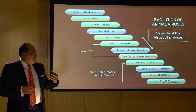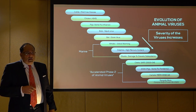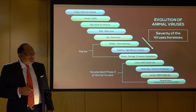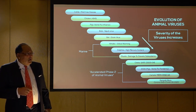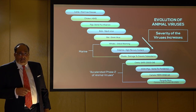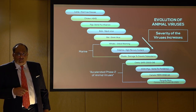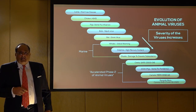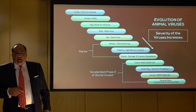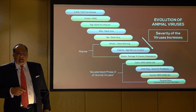SARS was due to consumption of civets and pigs. In 2009, there was the swine flu pandemic. MERS was due to consumption of camel in 2012-2014, and the current epidemic is due to consumption of bat-infected pangolin.